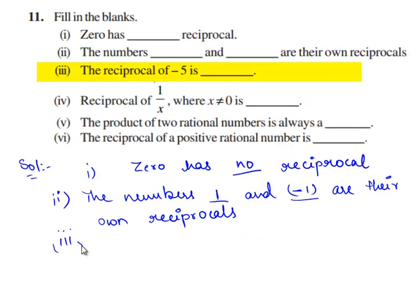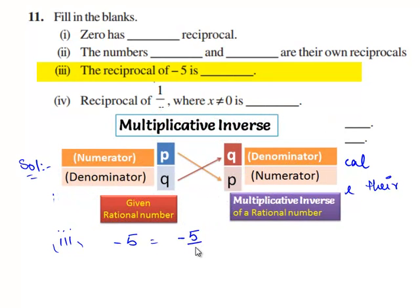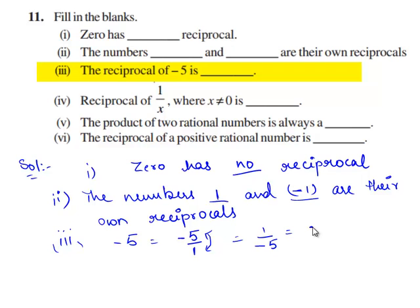The reciprocal of -5 is: -5 is equal to -5 by 1. Therefore, the reciprocal of -5 is obtained by interchanging the numerator and denominator which is 1 by -5, which in its standard form is -1 by 5. Therefore, the reciprocal of -5 is -1 by 5.